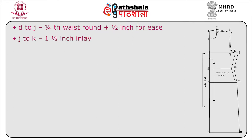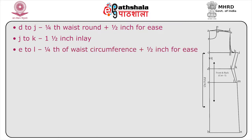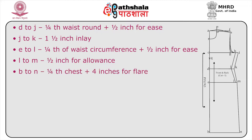H to I is one-and-a-half inches for inlay. D to J is one-fourth waist round plus half inch for ease. J to K is one-and-a-half inch inlay. E to L is one-fourth of waist circumference plus half inch for ease. L to M is one-and-a-half inch for allowance. B to N is one-fourth chest plus four inches for flare.